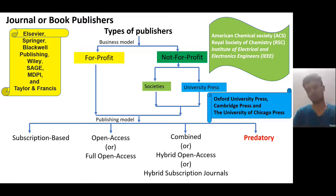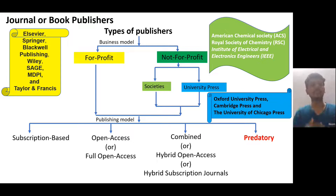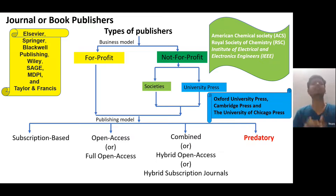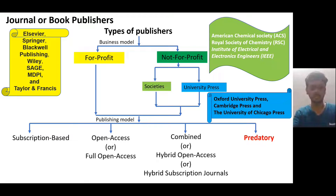Predatory journals are mushrooming in India. Even on the UGC CARE list, a journal listed in one year may not appear the next year because the UGC CARE list is dynamic — committees scrutinize journals annually and remove those with poor policies. I urge scientists, professors, and researchers not to go for predatory journals, as they waste your efforts and money entirely without any peer review process.